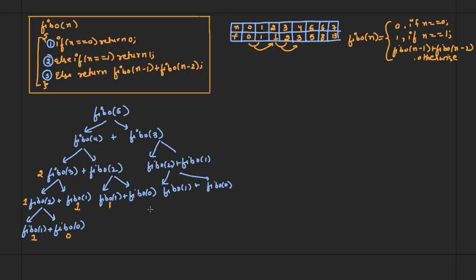Fibonacci(1) is 1 and Fibonacci(0) is 0, so Fibonacci(2) = 1 plus 0 = 1. Fibonacci(4) = 2 plus 1 = 3. Fibonacci(3) on the right side = 1 plus 1 = 2. And Fibonacci(5) = 3 plus 2 = 5, which you can verify from the table above.